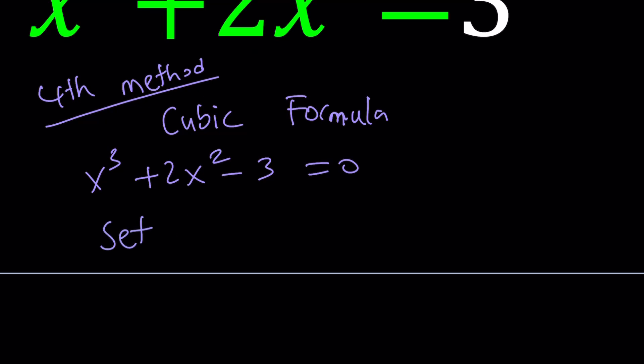And then we have to set x equals something so that we can get rid of the x squared. And that can be obtained by setting x equal to y minus two-thirds, and that negative two-thirds comes from this number divided by that number, and then negate it. That's the rule.